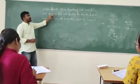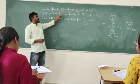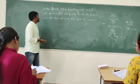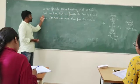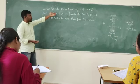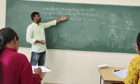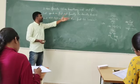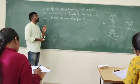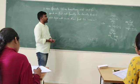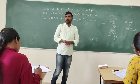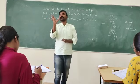A spends 5% of his income on travelling, and 20% of the remaining income on food. Finally, he donates Rs. 120 and still is left with Rs. 1,400. Find his income.